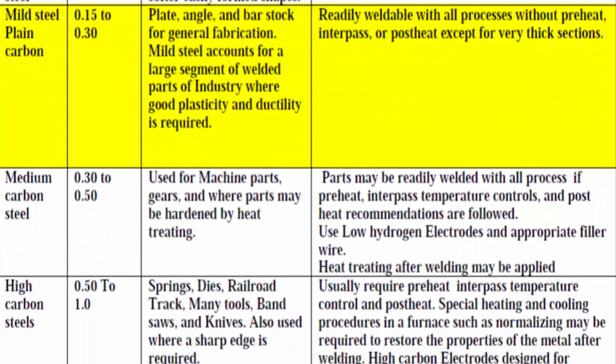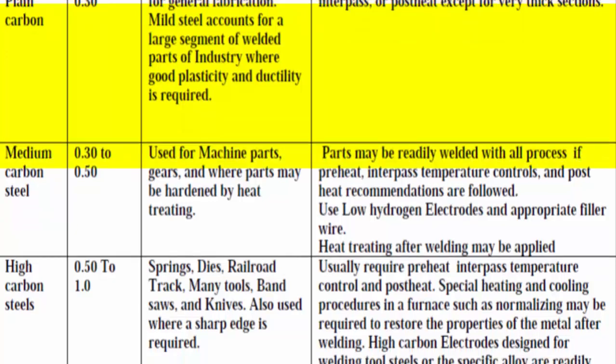Mild steel plain carbon group, content 0.15–0.30%. Typical usage: plate, angle, and bar stock for general fabrication. Mild steel accounts for a large segment of welded parts in industry where good plasticity and ductility is required. Weldability: readily weldable with all processes without preheat, interpass, or post-heat except for very thick sections.